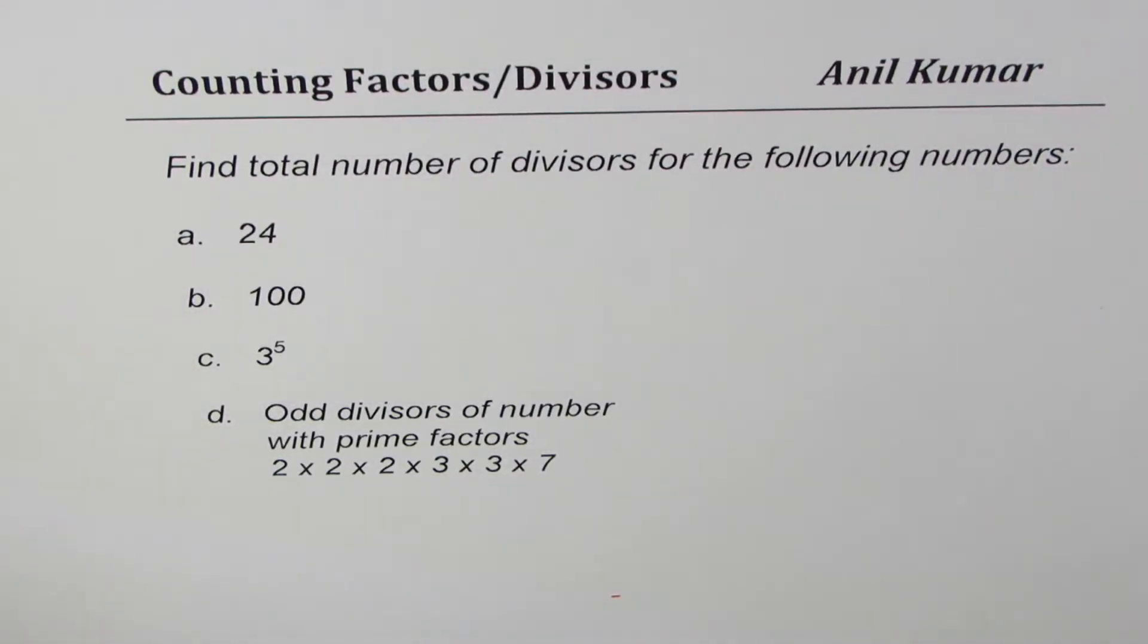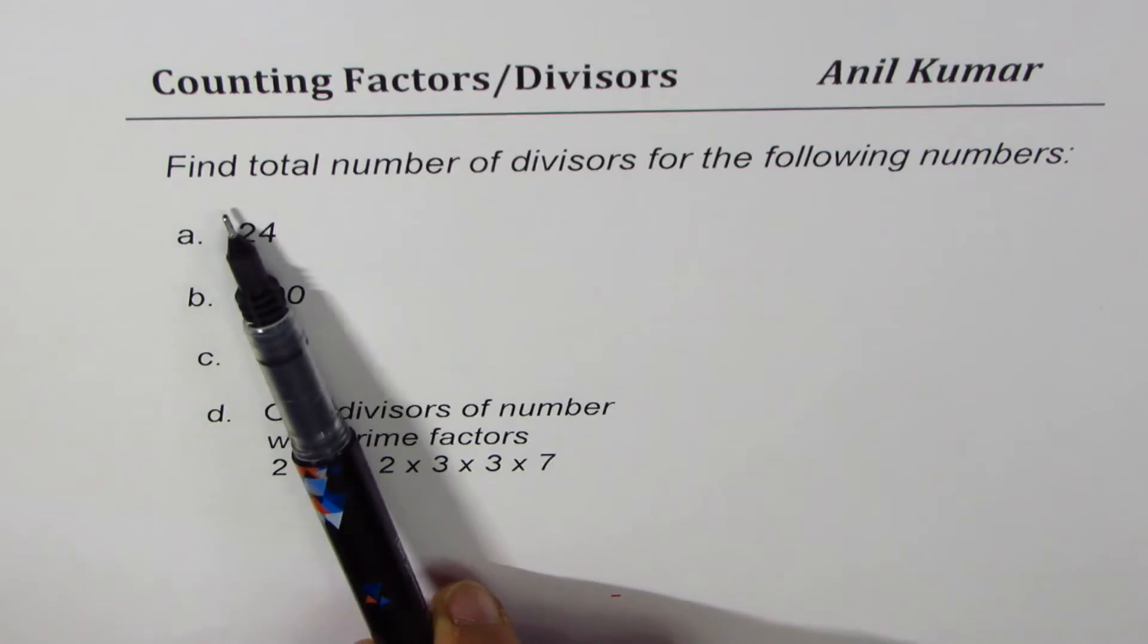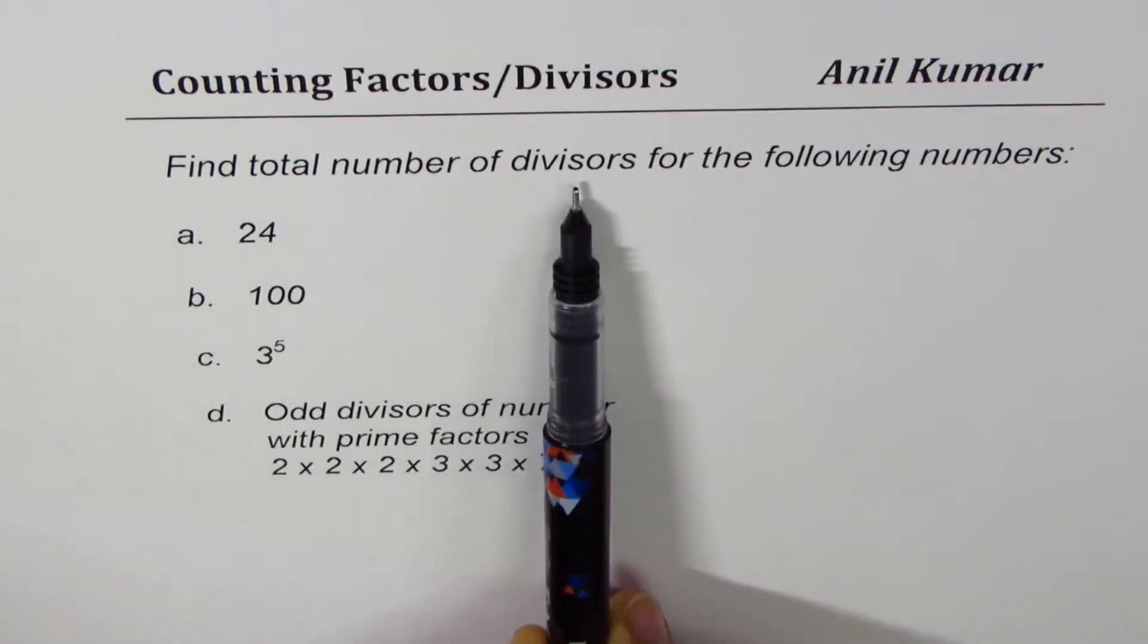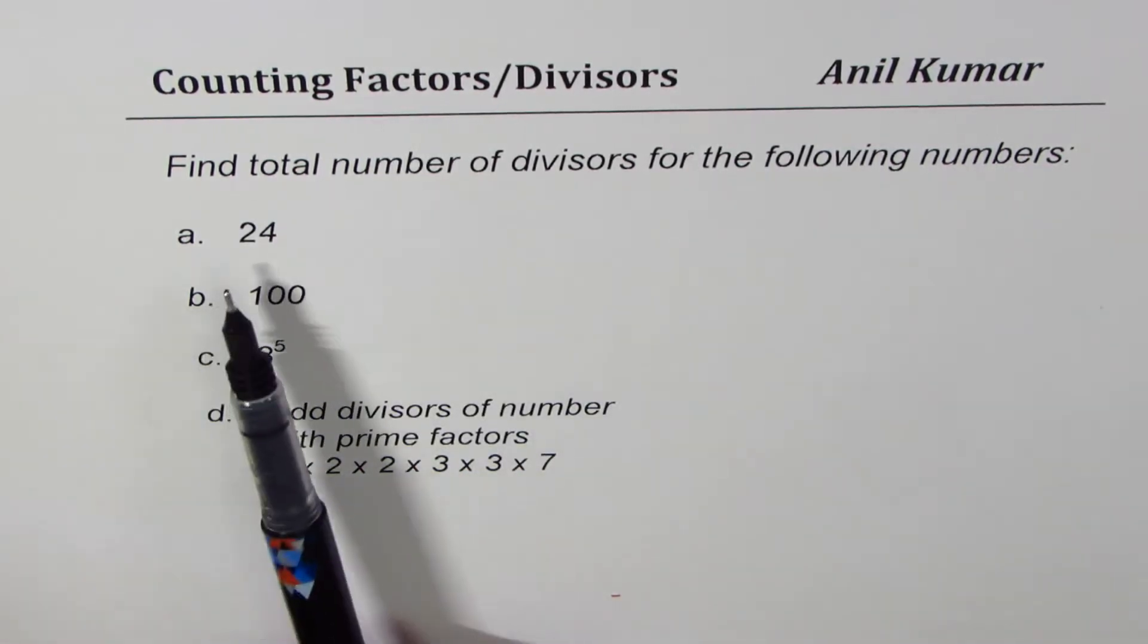I'm Anil Kumar sharing with you a practice test question on counting factors and divisors for given numbers. The question here is find total number of divisors for the following numbers: 24,